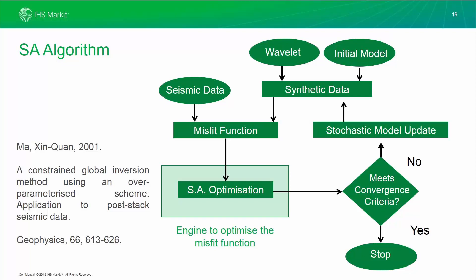We combine the wavelet and the initial model to create a synthetic trace, and we subtract this from the seismic data to get the misfit function, which is the difference between the two. We use the SA optimization to work on the difference and reduce this down to the lowest value. Apart from the seismic misfit, there is a model misfit too, which is the difference between the current impedance model and the background model. The model misfit constrains the inversion and reduces the non-uniqueness problem. The inversion goes round and round through the loop until it finds a trace that is a near perfect match, and then it stops.